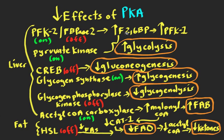Additionally, fructose 2,6-bisphosphate going up also suppresses gluconeogenesis. Pyruvate kinase — step 10 of glycolysis — is normally phosphorylated and inactivated by PKA, but in this case it's not phosphorylated, so it remains in the active state. This gives us multiple mechanisms for turning glycolysis on: lack of PKA stimulation and insulin induction of glucokinase.